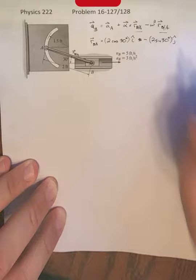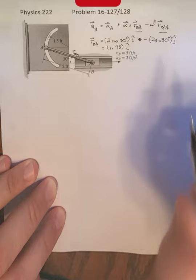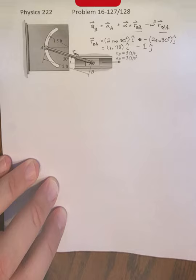So you'll also recognize this is a 30, 60, 90 right triangle. 2 cosine 30 is the square root of 3. So we'll approximate that as 1.73 i hat minus 1 j hat, where all of these then are measured in feet.